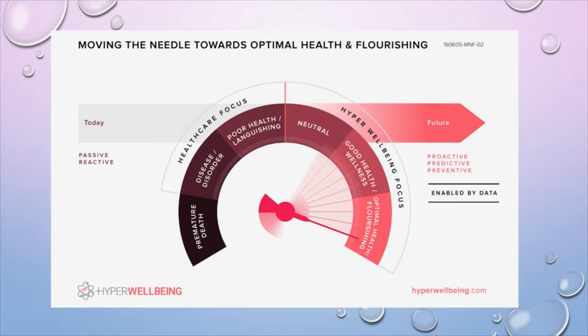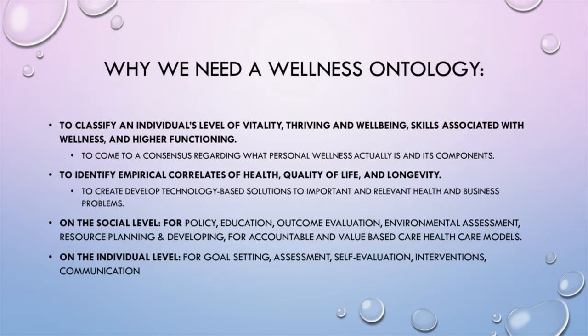There's still a lot we do not know about how to get to optimal health. How do we move this needle into the future? How do we enable wellness with data? How do we define what wellness is in the first place? We need a shared language so we can all talk about the same things, measure them, and understand what we're all talking about. We need a wellness ontology to classify an individual's level of vitality, thriving, and well-being, and the skills associated with wellness and higher functioning — to come to a consensus of what wellness is.